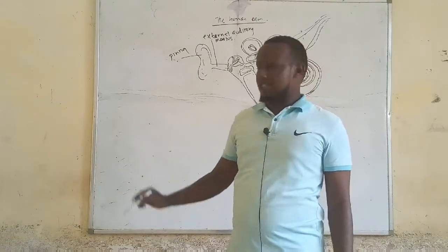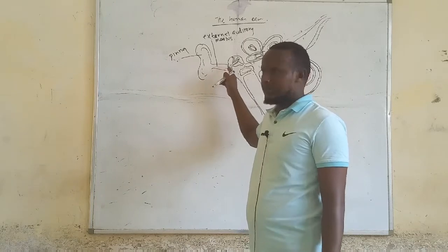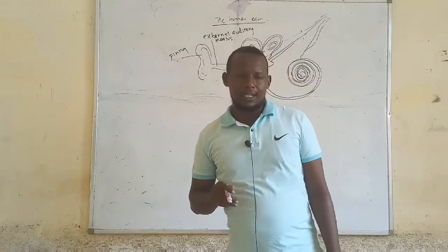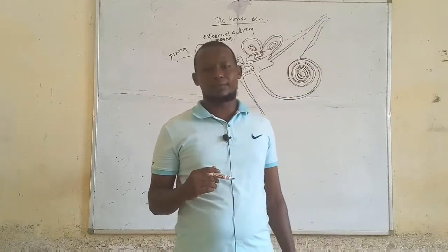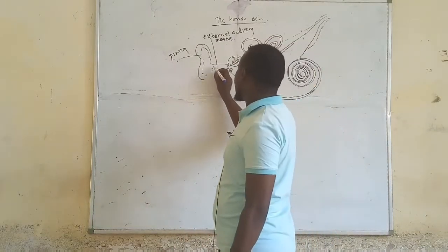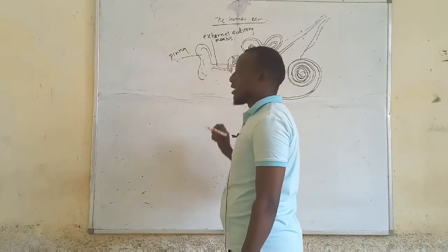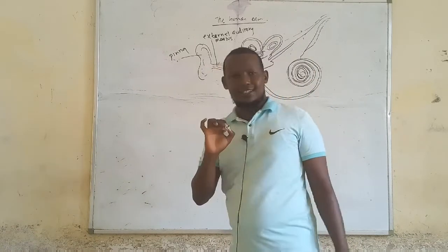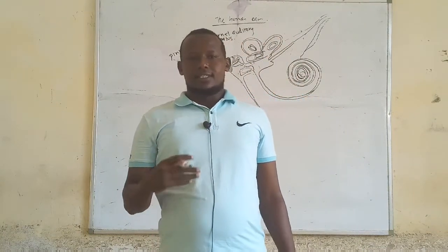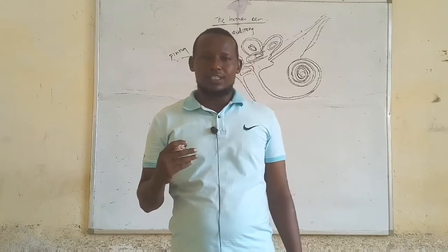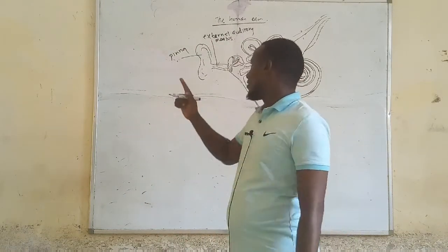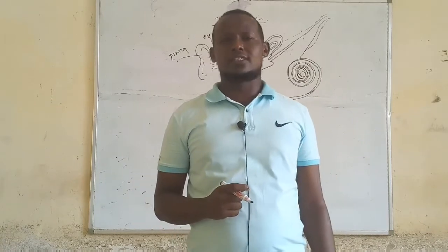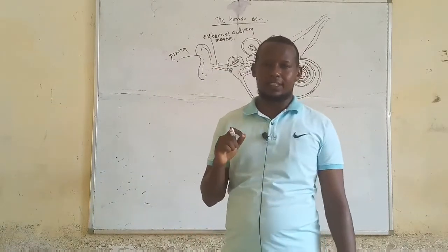The external auditory meatus is this passage that leads the sound waves into the tympanic membrane. Within the linings of the external auditory meatus, it has secretory cells — secretory cells that secrete wax. The wax traps the dust and solid particles and prevents them from reaching the tympanic membrane. Another role of the wax is it increases the flexibility of the eardrum.